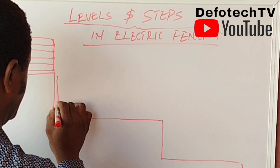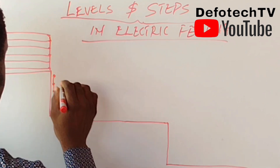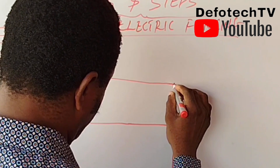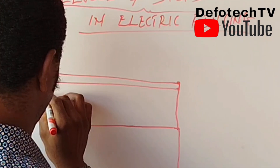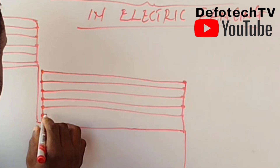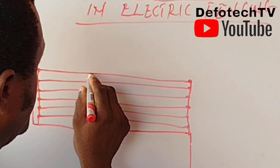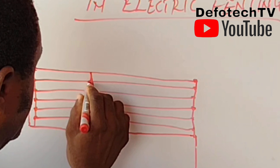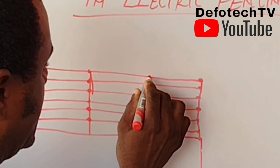Let's say this side has lines one, two, three, four, five, and six. We have the last bracket here with lines two, three, four, five, and six. Then we have our intermediate bracket — let's assume we have one intermediate bracket here, and we have another intermediate bracket here.